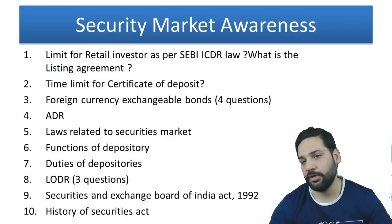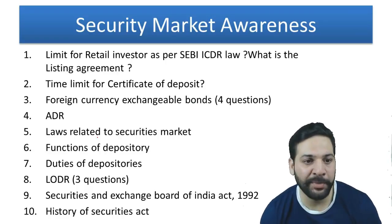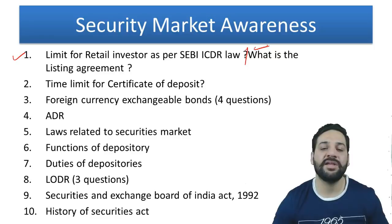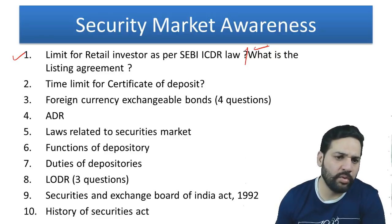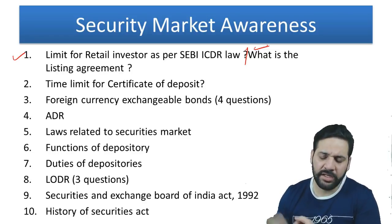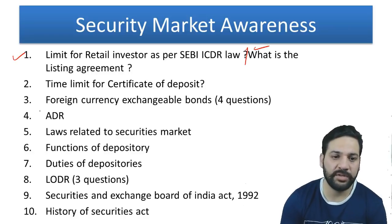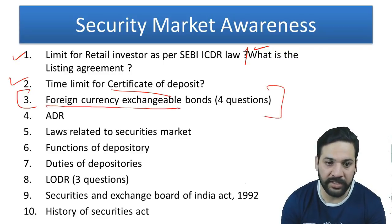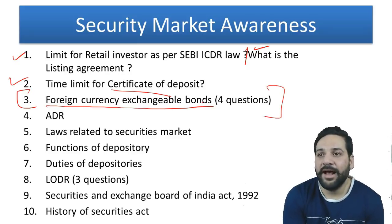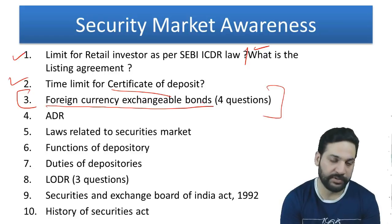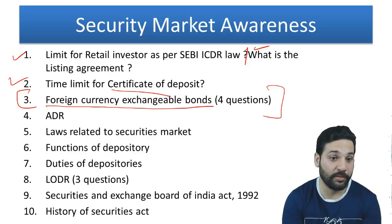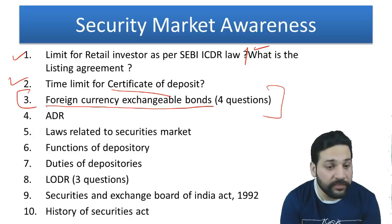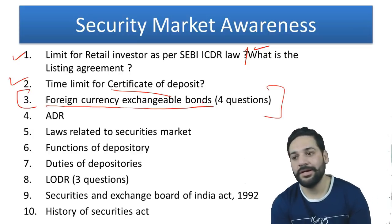For Security Markets, the questions were common. The limit for retail investors as per SEBI ICDR is two lakh rupees. There was a question on listing agreement — a listing agreement is between a stock exchange and a listed entity. There was a question on the time limit for Certificate of Deposit. Surprisingly, there were four questions from Foreign Currency Exchangeable Bonds, which was a surprise factor in the Security Market Awareness section.